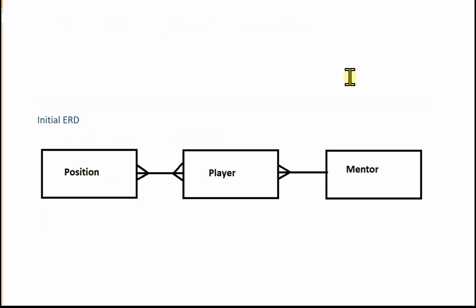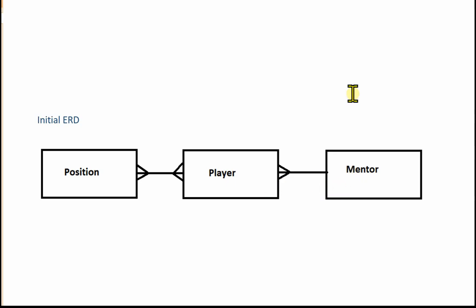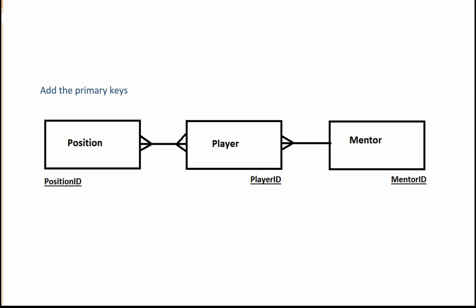I've drawn up an initial ERD with our three entities: position, player, and mentor. The relationship lines show that a position can be held by many players and a player can hold many positions — so many-to-many between position and player. A mentor can mentor many players, and a player is mentored by one mentor — one-to-many between mentor and player. I've also added the primary keys: position ID for position, player ID for player, and mentor ID for mentor.